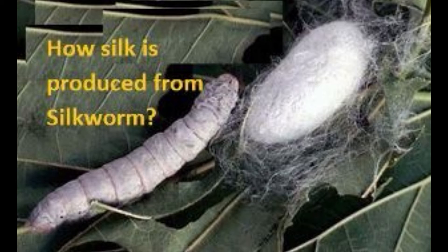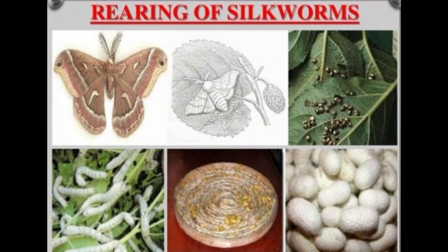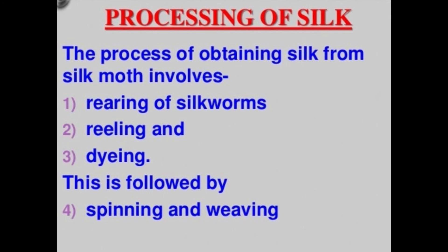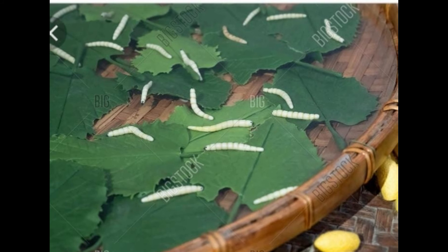To obtain silk, silkworms are reared and their cocoons are collected. A female silk moth lays hundreds of eggs at a time. These eggs are stored with small pieces of paper and cloth and then given to silkworm farmers. The farmers keep the eggs under hygienic conditions and warm them at a suitable temperature until they hatch into caterpillars. The caterpillars are then kept in clean bamboo trays with small pieces of mulberry leaves to feed on.